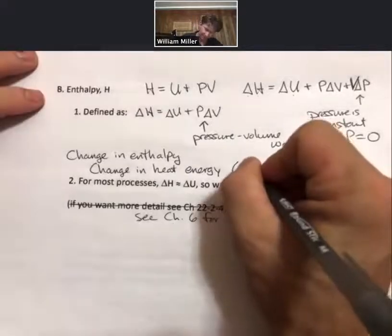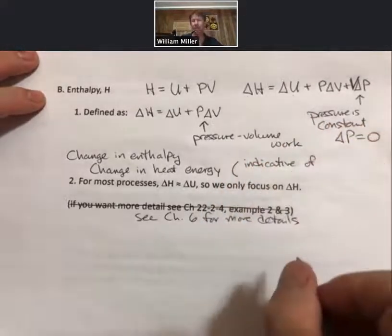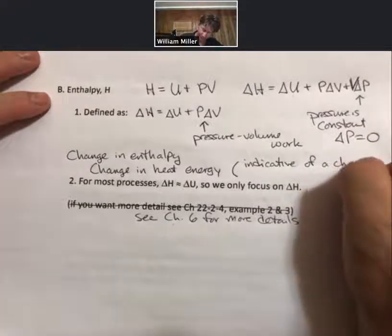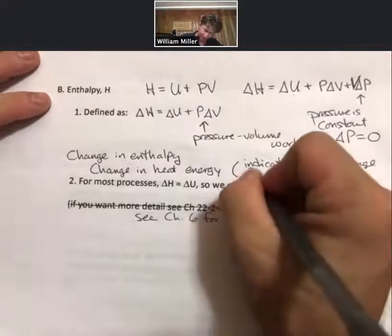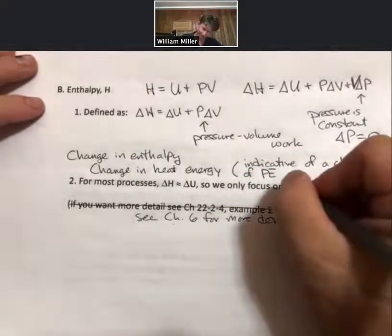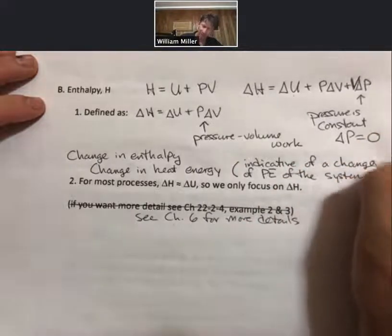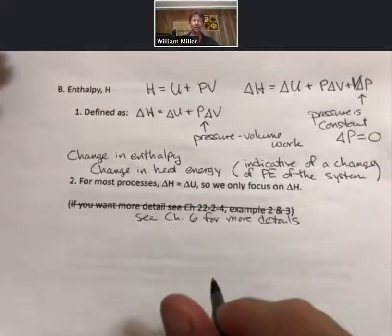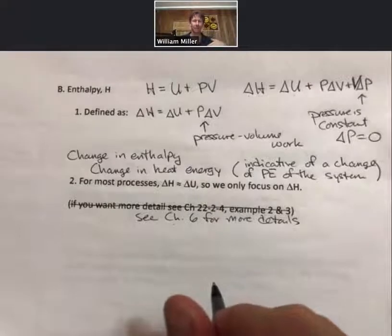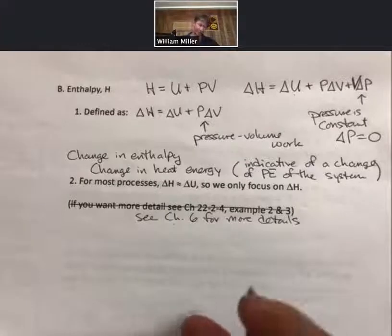So it's going to be indicative of a change in potential energy, where potential energy is PE of the system. So we're going to be able to say things about the system based on whether it gives off or takes in energy, and we're going to be able to say things about the bonds. That's what we're working towards anyway.